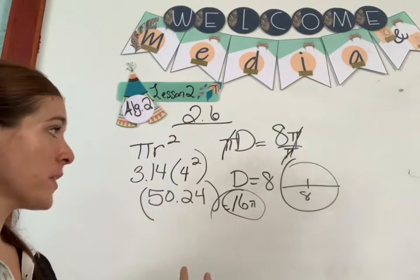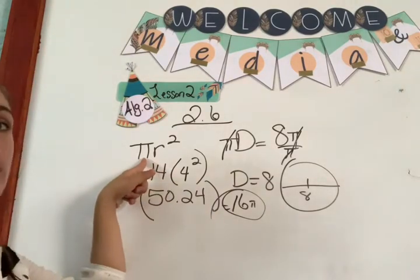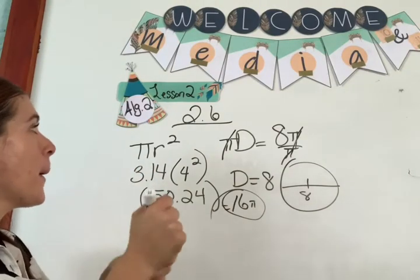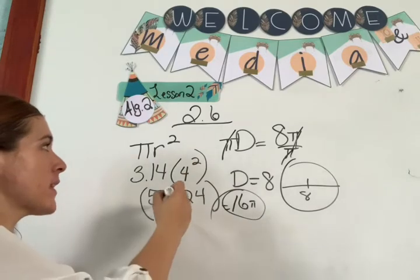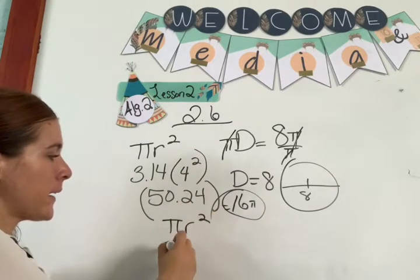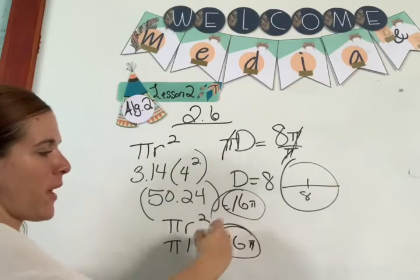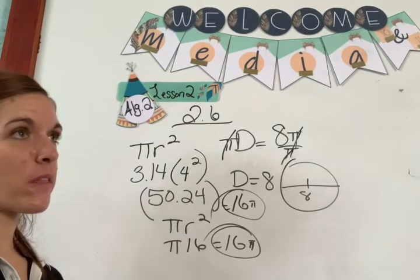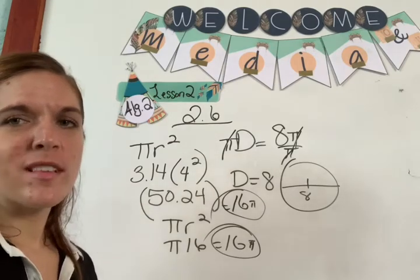I can show you that form easily. If area is pi r squared and r squared is 4 to the 2, which is 16, then pi r squared is pi times 16, so 16 pi. If your brain works that way, do it that way.